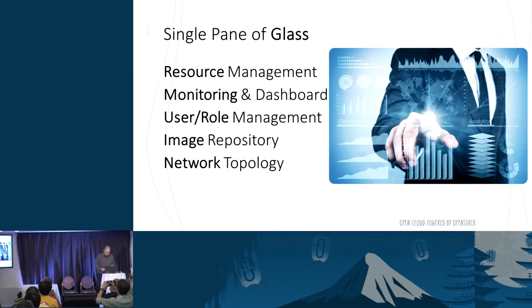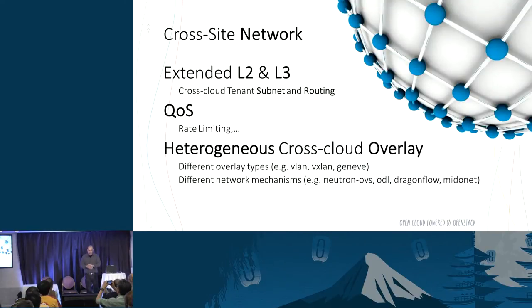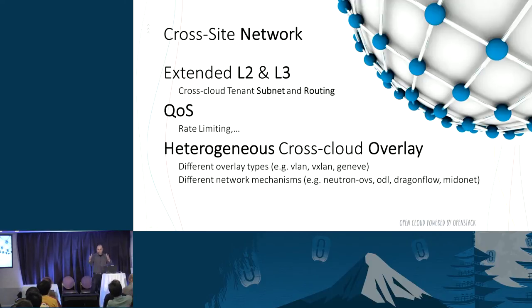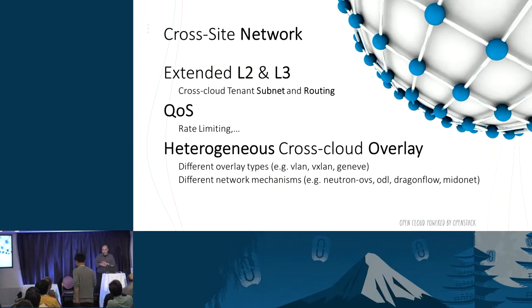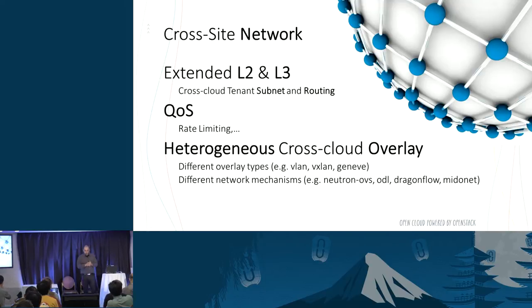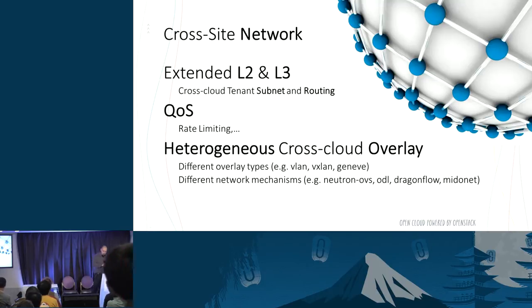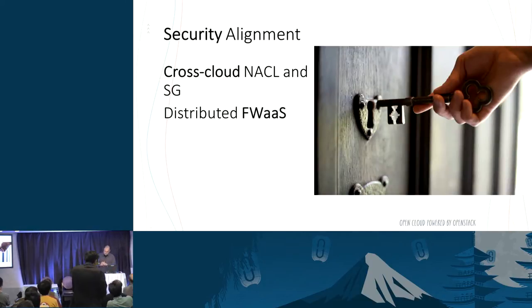Cross-site networking is the holy grail — extending the L2 and L3 network across different clouds, allowing you to have the same subnet and the same IP range in different clouds. This is very important if you want to move or migrate VMs across different clouds without reconfiguring everything. Quality of service: you can do rate limitation based on tenants when crossing the heterogeneous cross-cloud overlay. Security alignment: you want cross-cloud network access control lists.